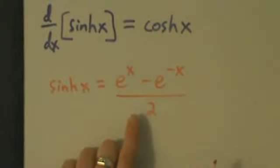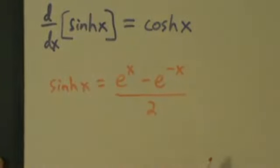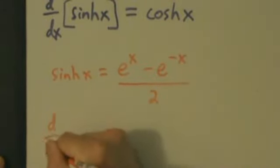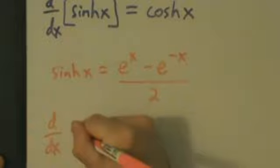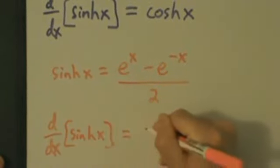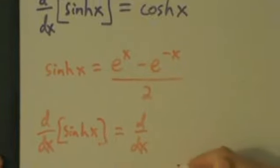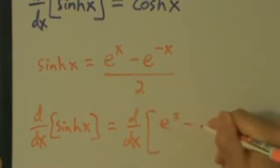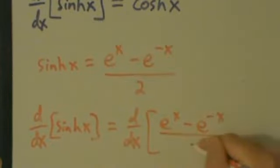And we're just going to use this definition to prove this derivative here. So it'll be pretty straightforward. So let's just go ahead and jump right in. So d dx of sinh x equals d dx of e to the x minus e to the negative x all over 2.